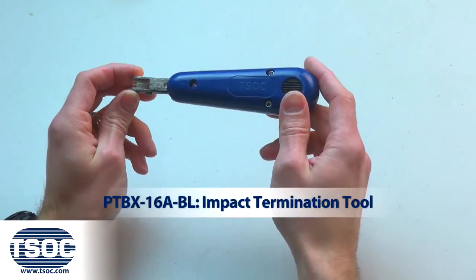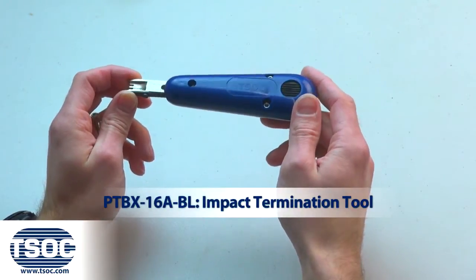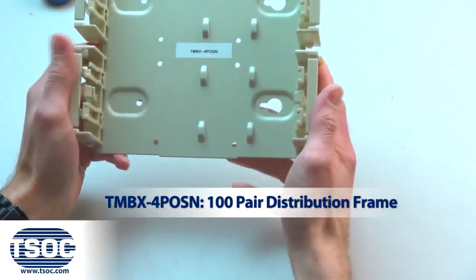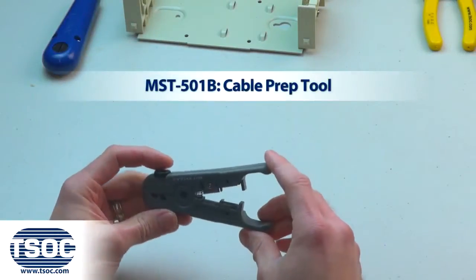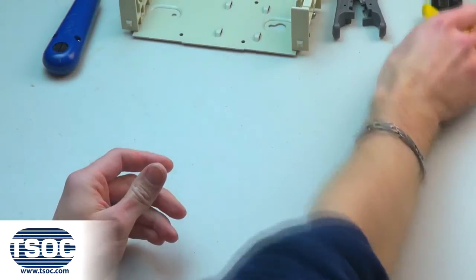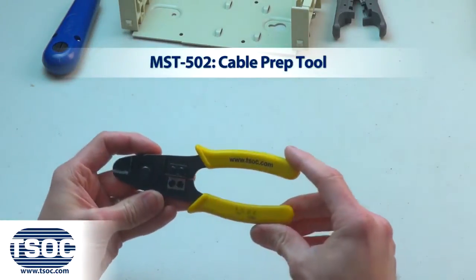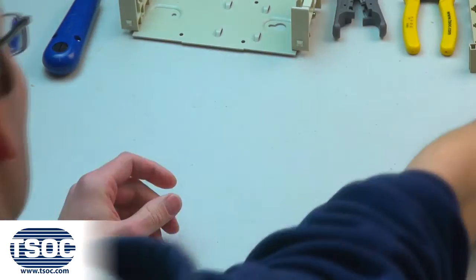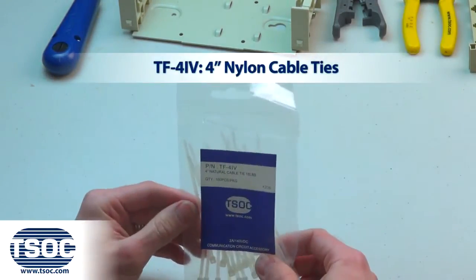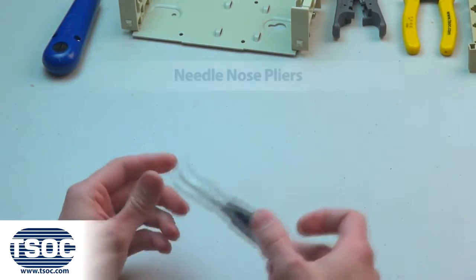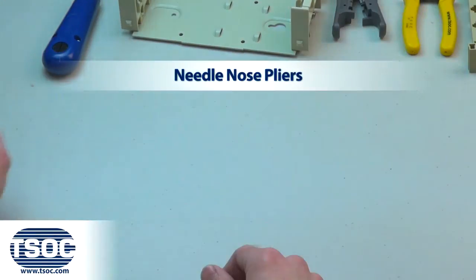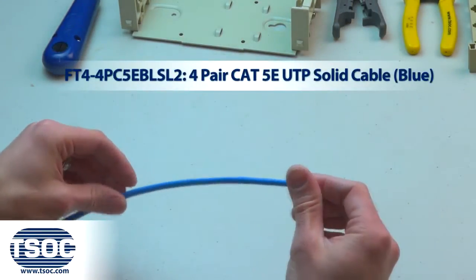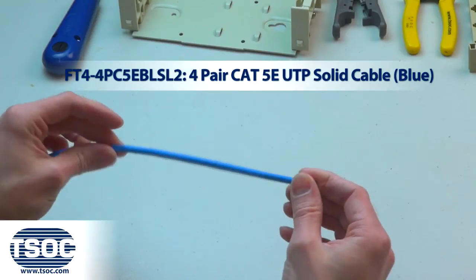You'll need the following materials: Impact Termination Tool, 100-Pair Distribution Frame, Cable Prep Tool, 6-Port RJ45 Modular Distribution Connector, 4-Inch Nylon Cable Ties, Needlenose Pliers, and 4-Pair CAT5E UTP Solid Cable.